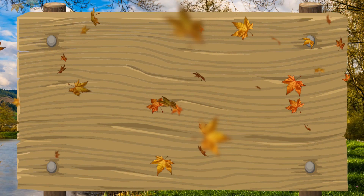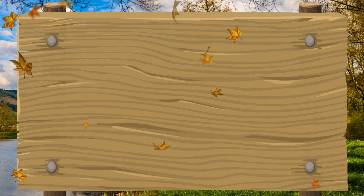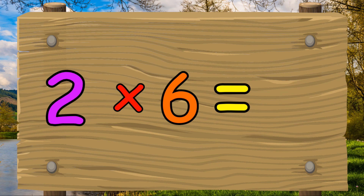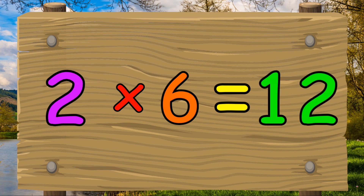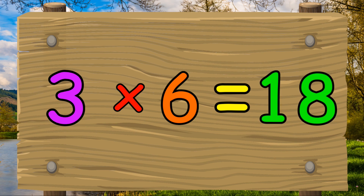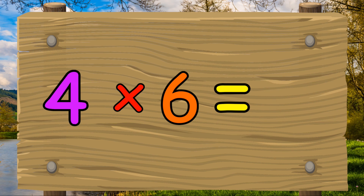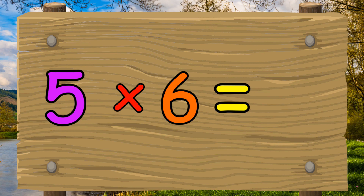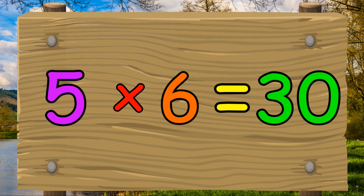Let's do the six times table one more time. One times six equals six. Two times six equals twelve. Three times six equals eighteen. Four times six equals twenty-four. Five times six equals thirty.